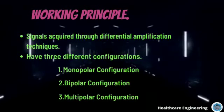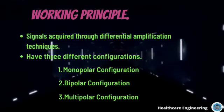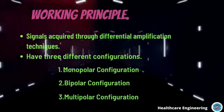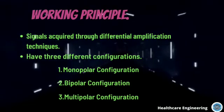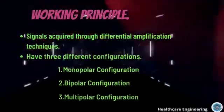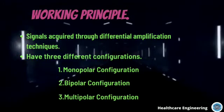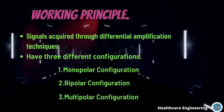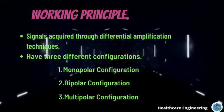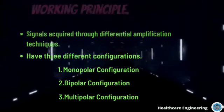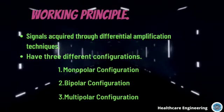Now let's talk about the working principles of EMG electrodes, starting with configurations. The EMG signal is acquired through different amplification techniques. Differential amplifiers should have high input impedance and very low output impedance — ideally, infinite input and zero output impedance. The placement of the EMG detecting surface can be done through three different configurations: monopolar, bipolar, and multipolar configuration.